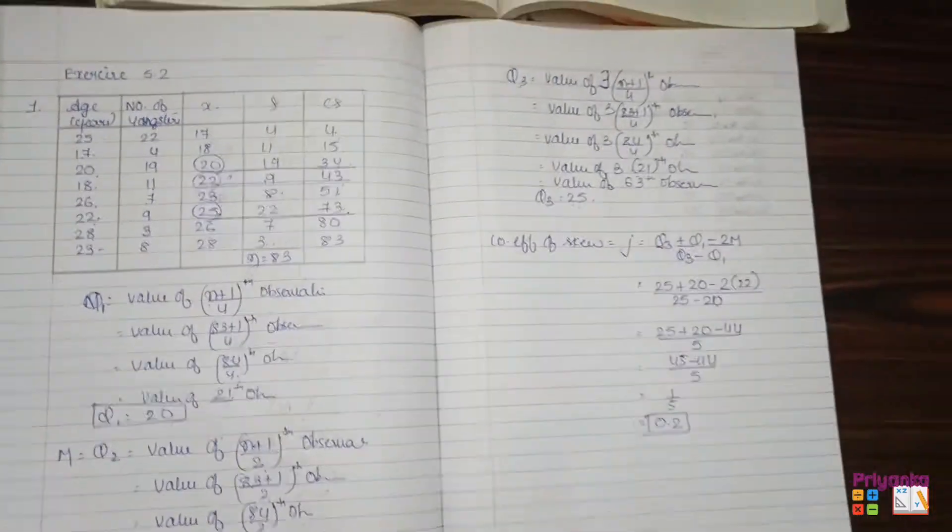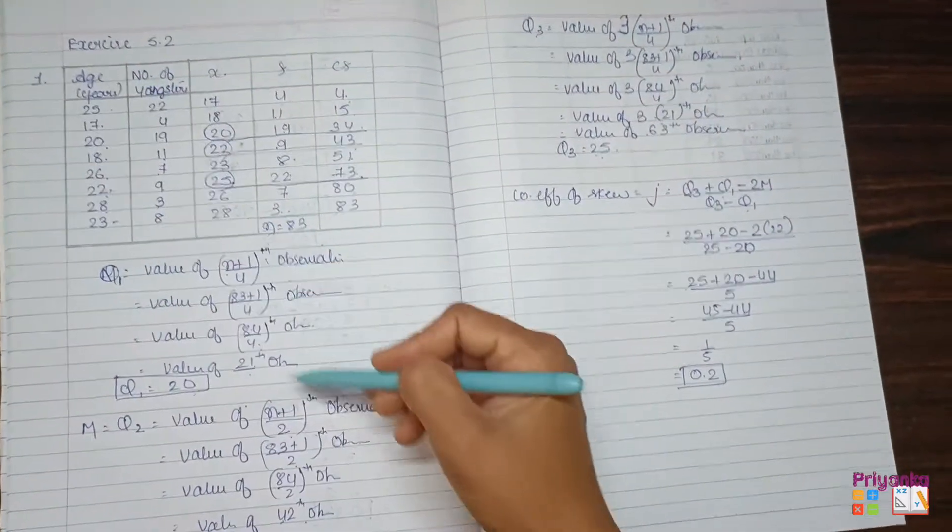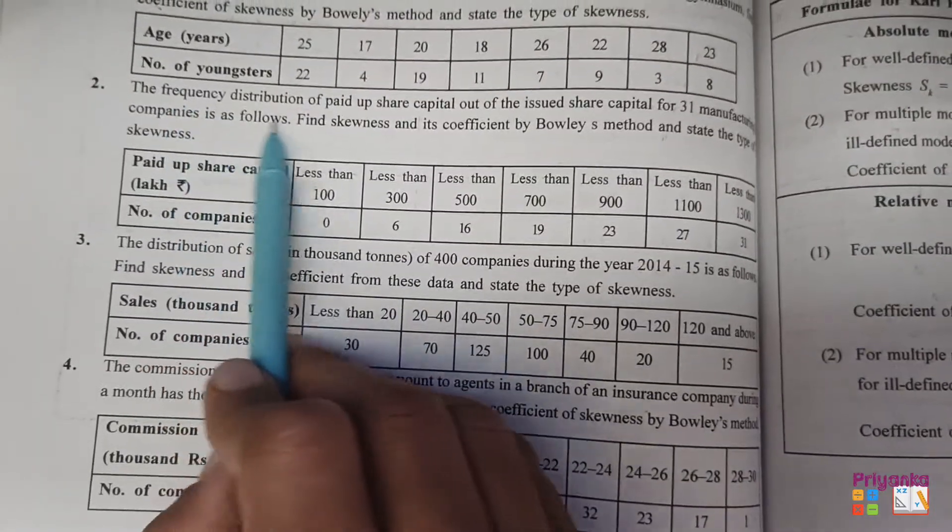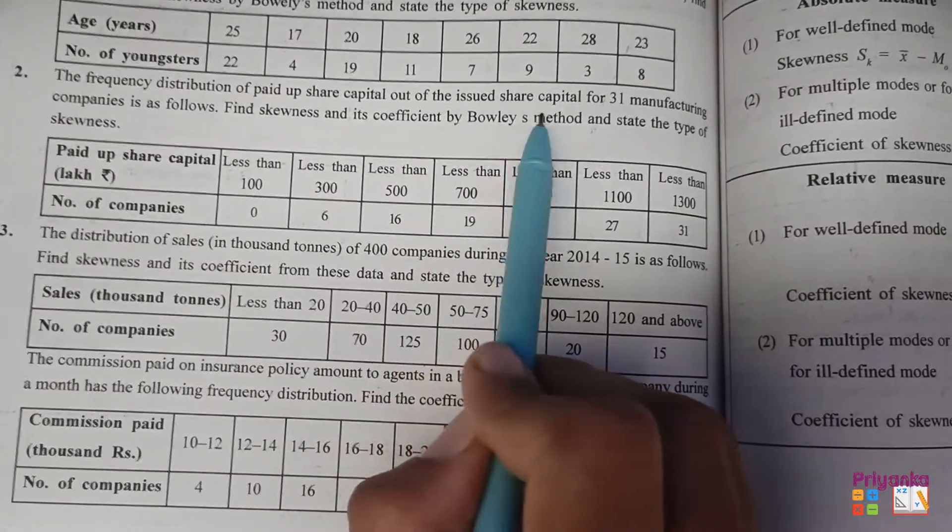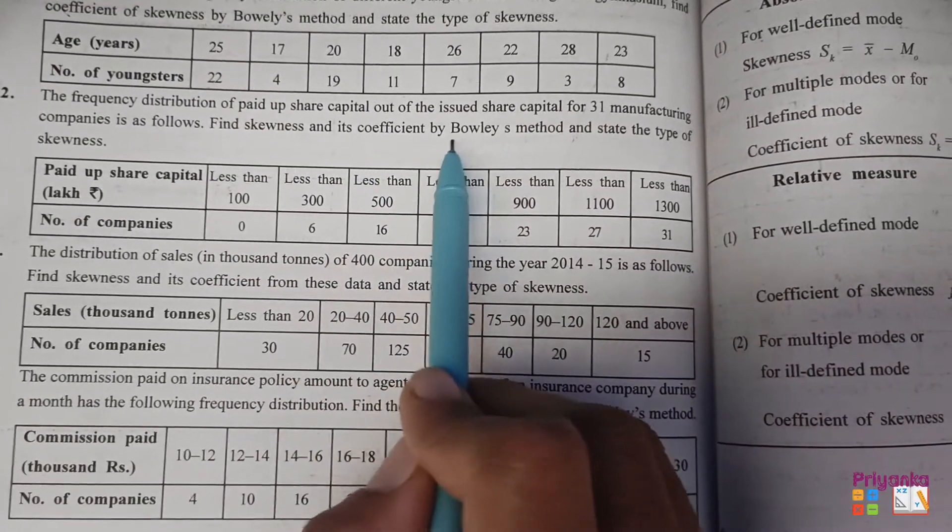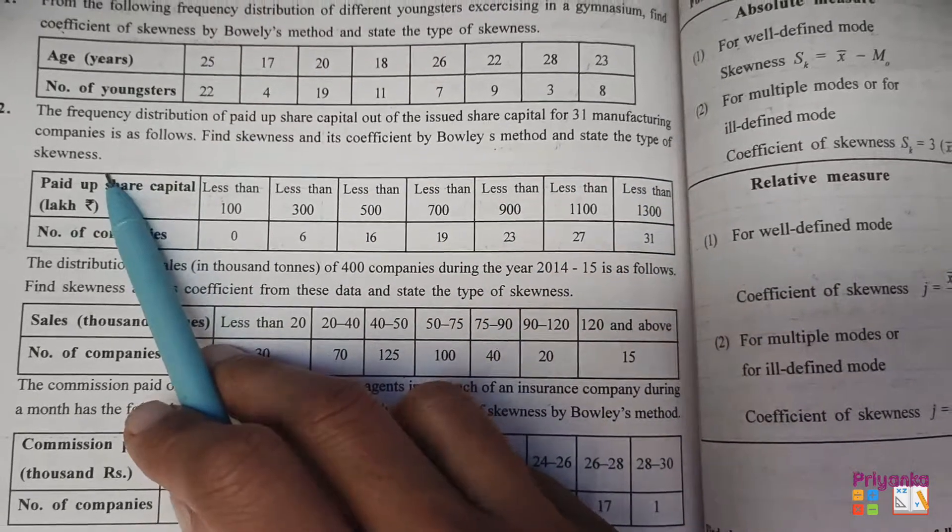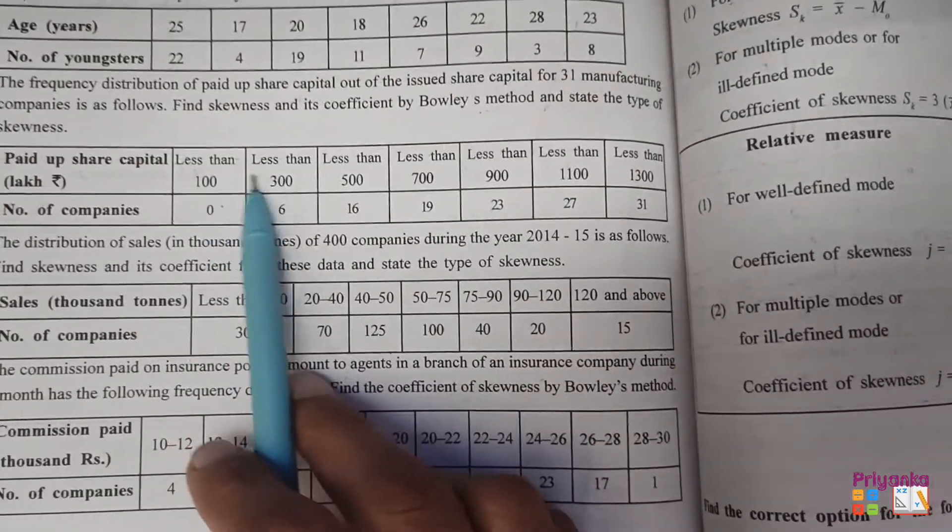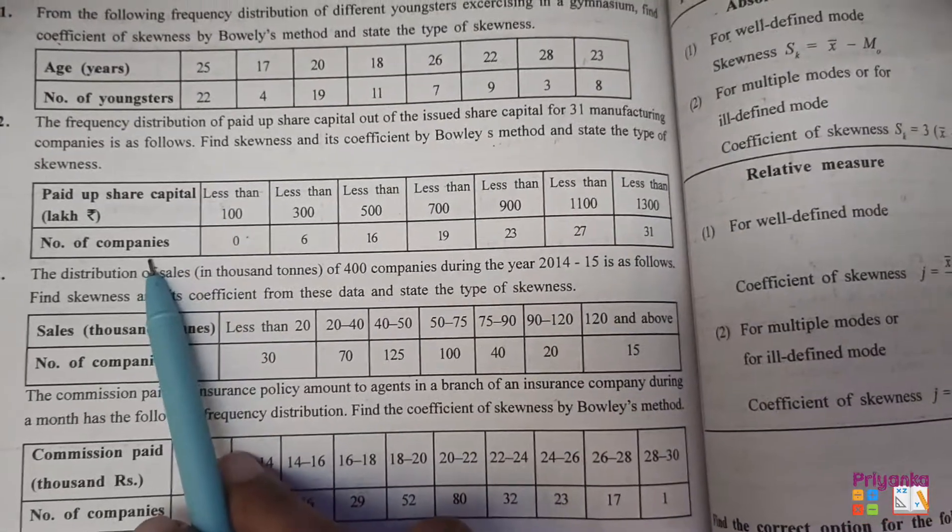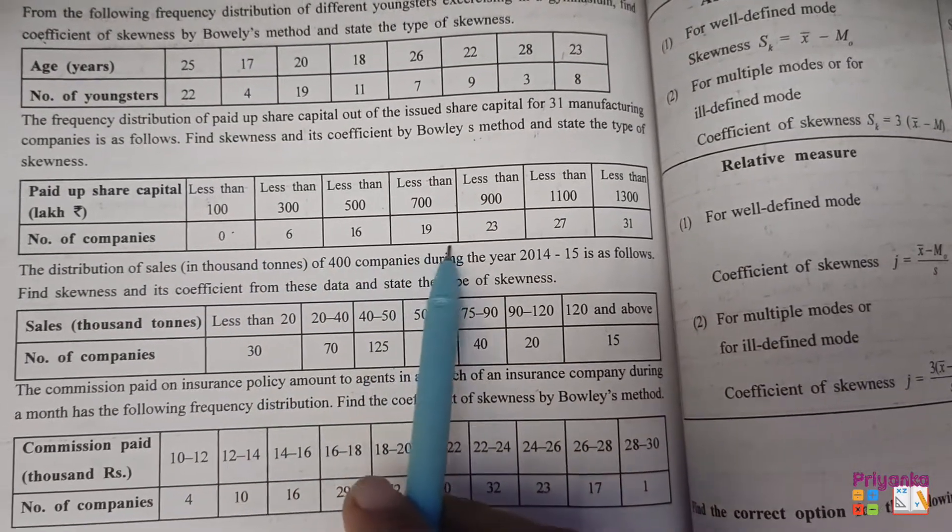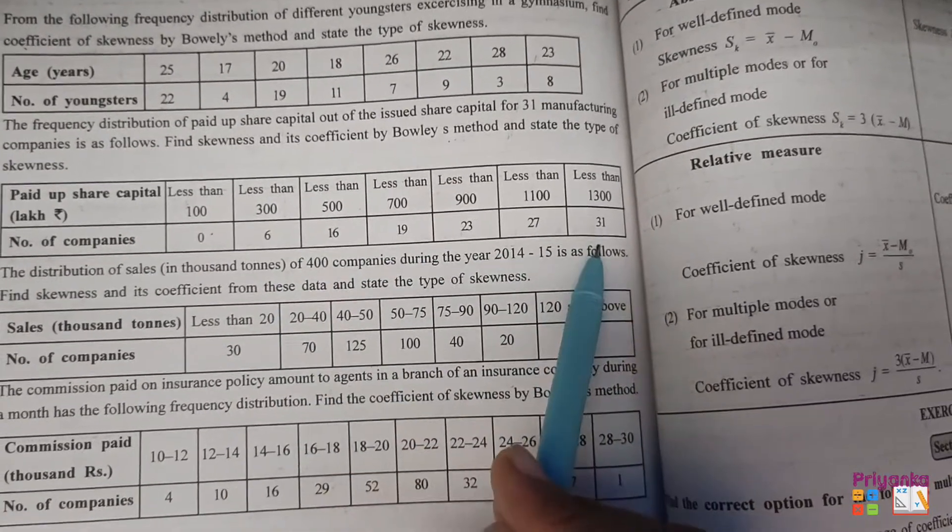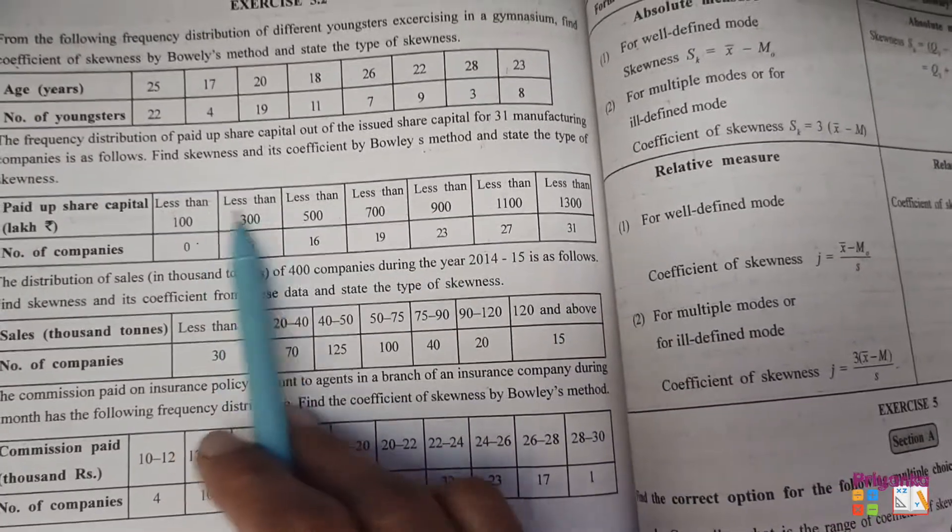This is how we will find out for the remaining. Because it was discrete, we use this formula. So moving to the next question from Exercise 5.2. The frequency distribution of paid-up share capital out of the issue share capital for 31st manufacturing company is as follows. Find skewness and its coefficient by Bowles matter and state the types of skewness. Let's see the information. Here it is given the less than observation: less than 100, 300, 500, 700, and all. And number of frequency, that is the frequency which you can see is given in the information of less than cumulative frequency.